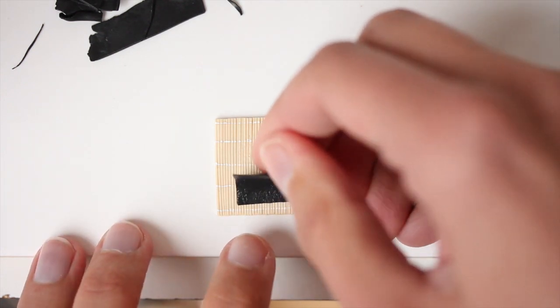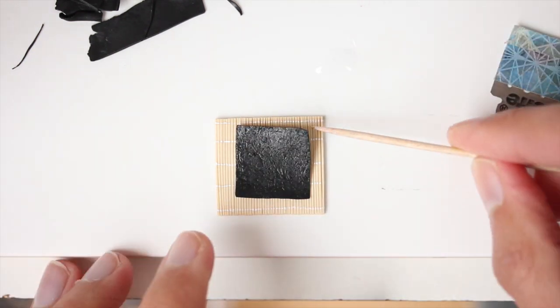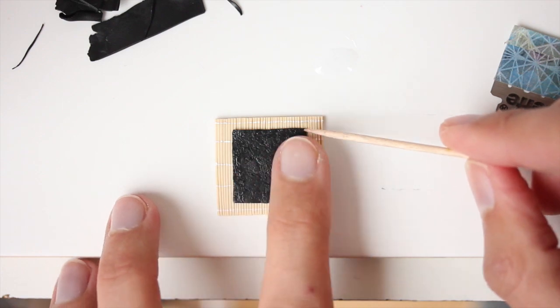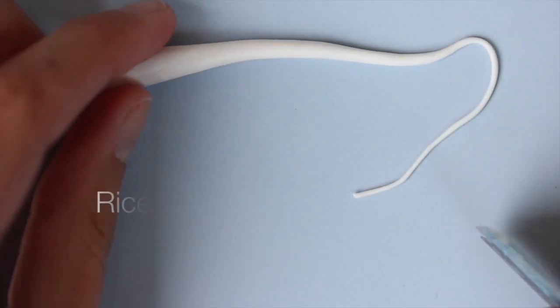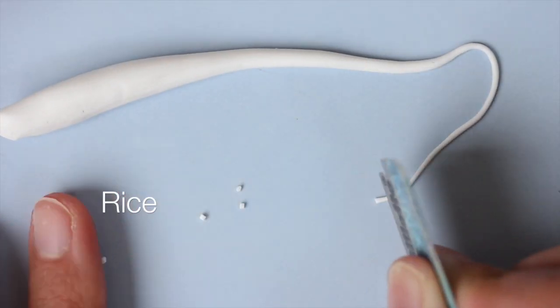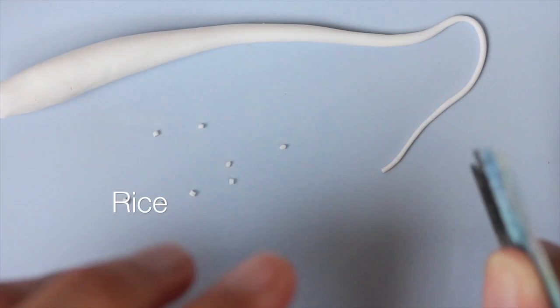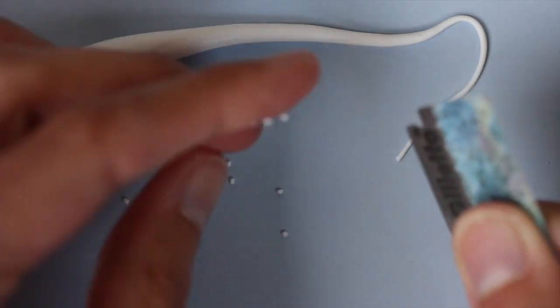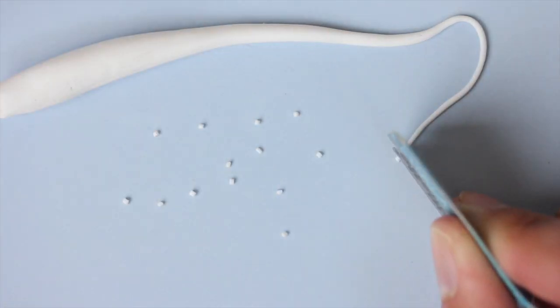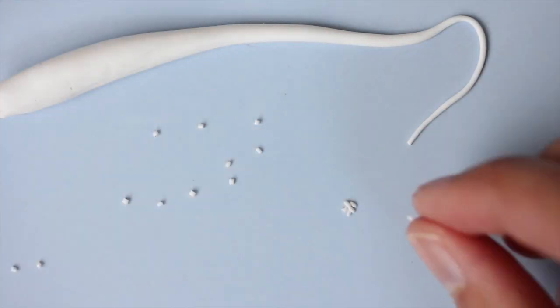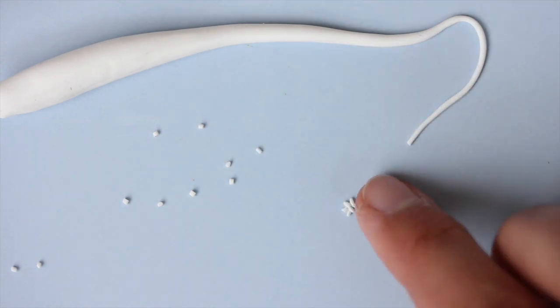I'm just adjusting, and then I'm starting on the rice. For the rice I cut out some very thin pieces of clay and then I'm rolling each tiny rice. Since it's very time consuming, I thought I'd just make a bunch of rice grains.